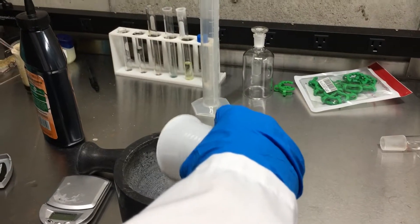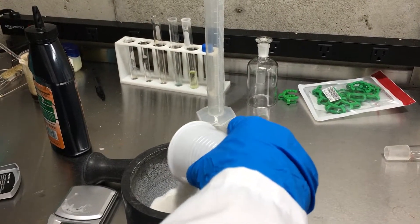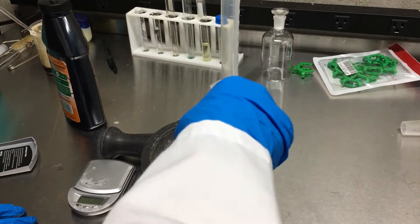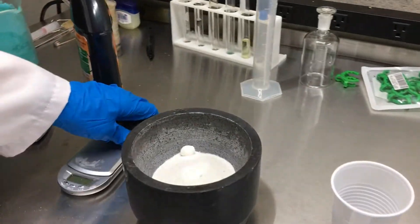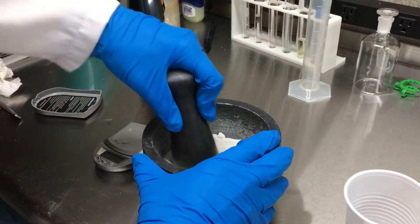For my potassium nitrate I will be using stump remover that I got at the hardware store, and I'm making sure to finely grind it up after measuring out 140 grams.